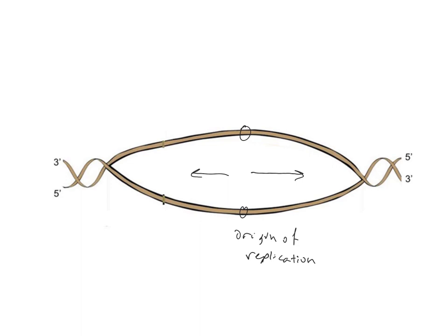This causes some problems for DNA replication because DNA polymerase can only extend the new strand in the 5' to 3' direction. This is because DNA polymerase needs a free 3'-OH group in order to add the next nucleotide to it. So how do we figure out the leading versus the lagging strands?